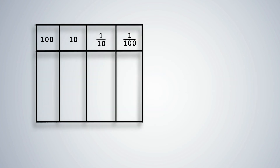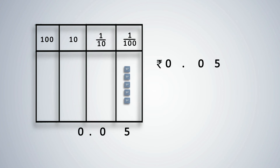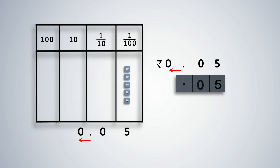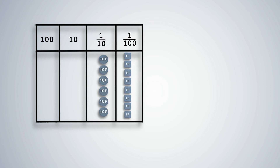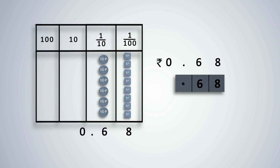Now, if we had only 5 paise and no rupee notes or whole numbers, this number has to be written and read as 0.05 rupees, since it is five hundredths of a rupee. Absence of a whole number to the left of the decimal point is represented by a zero. 68 paise is written as 0.68 rupees. Students must remember that the first place to the right of the decimal point is the tenths place, and the second place to the right is the hundredths place.